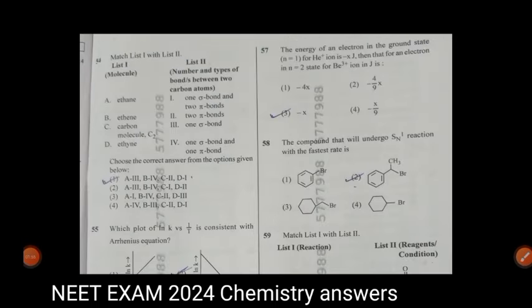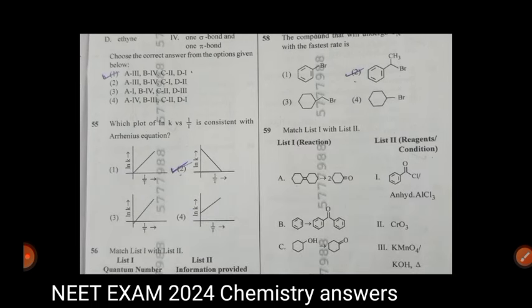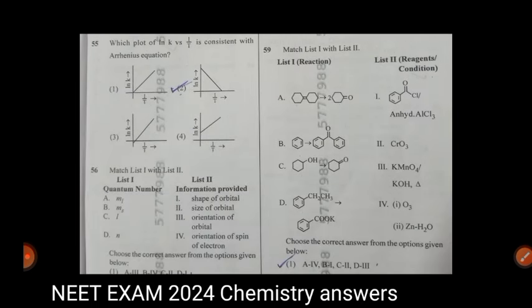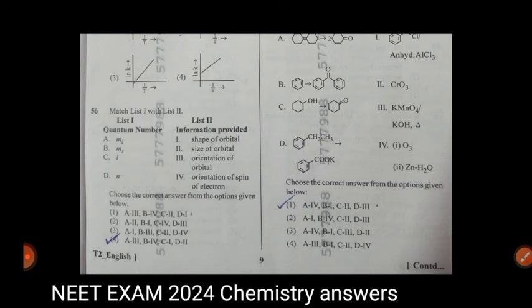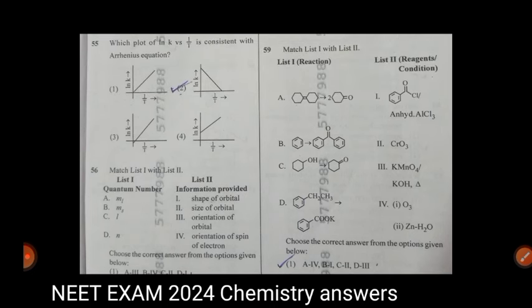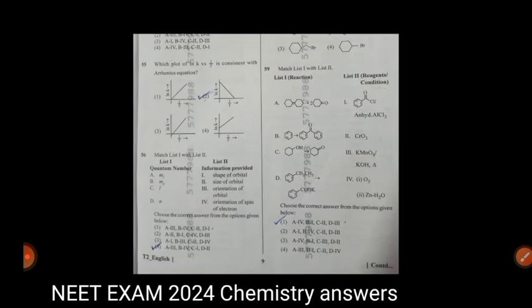Question 57, the energy of an electron. Answer is minus X. Question 58, the answer is the compound. Answer is 2nd. Question 59, match list 1 with list 2. Answer is 1. You can see the questions and answers here.